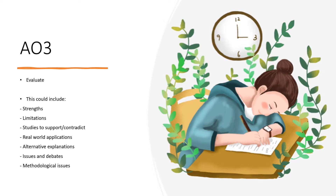When we're looking at AO3, we're looking at our ability to evaluate. This can include so many different things: strengths and limitations, studies to support or contradict, real world applications, alternative explanations. We could bring in some of the issues and debates we learn on this course, methodological issues, and many more.